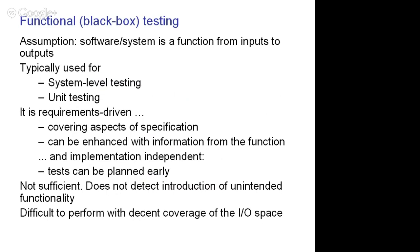Functional black box testing: the assumption is that the system or subsystem under test is really a black box — something for which we know what the inputs are, we know what the outputs are, we know the expected properties of the outputs with respect to the inputs, because it has been described in a specification document. But we don't know what the internal algorithm is, what the internal solution to the problem is, or even what the internal structure is. It is typically used for system-level testing of the entire system or subsystems, or for unit testing, where the component is described in a software requirement document as a black box.